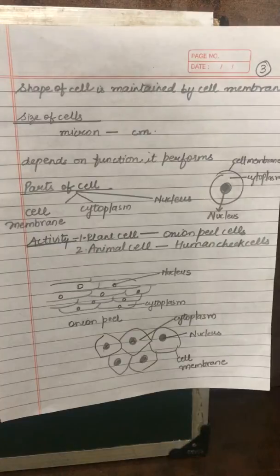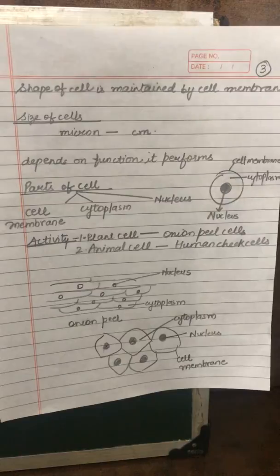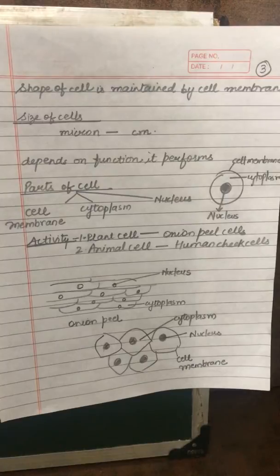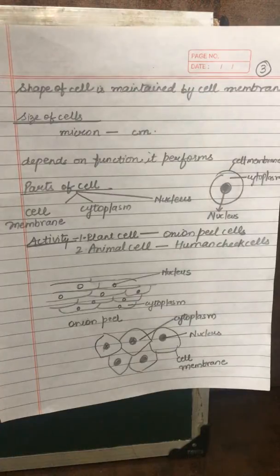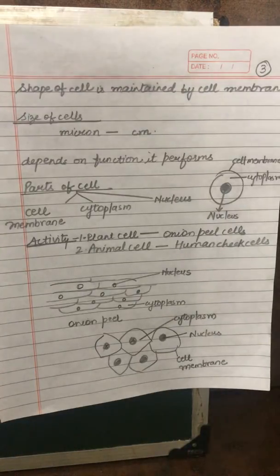In onion peel cell slides, we have used safranin, and in human cheek cell slides, we have used methylene blue to color the cell so that we can study it in detail. You have to remember the names of the stains used in both slides, okay?